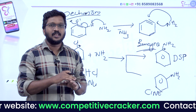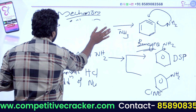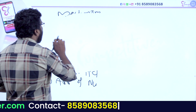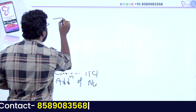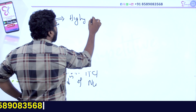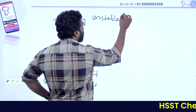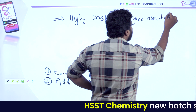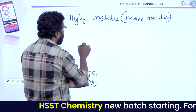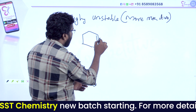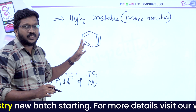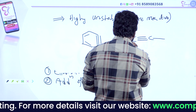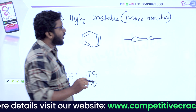Benzyne is highly unstable and more reactive. Benzyne has a carbon-carbon triple bond within the ring, which means there is a carbon-carbon triple bond. What is the hybridization? It is SP2 hybridization. It is SP hybridization — highly unstable and more reactive.